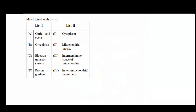List 1: citric acid cycle, glycolysis, electron transport system, proton gradient. List 2: cytoplasm, mitochondrial matrix, intermembrane space of mitochondria, inner mitochondrial membrane. Basically, they are asking you the site where all these processes occur.